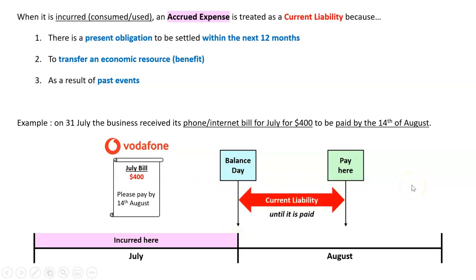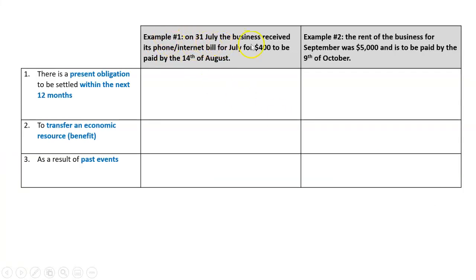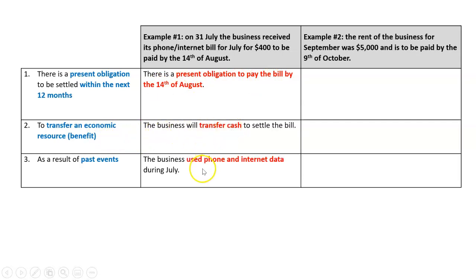So until it's paid, we need to call it a current liability. Why? Well, let's just do that example in the first column here. The business got its phone bill, internet bill for July for $400. What is the present obligation to be settled within 12 months? Well, the obligation is to pay that bill by the 14th of August. What economic benefit are we going to transfer? Obviously, we'll transfer cash to Vodafone. What was the past event? We used the phone and the internet during July.